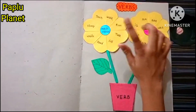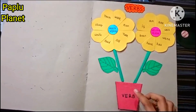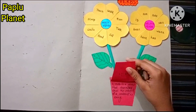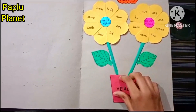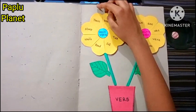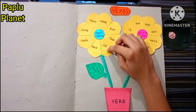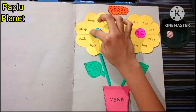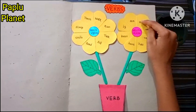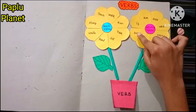Verbs: main verbs and helping verbs. A verb is a word that describes what the subject of a sentence is doing. Main verbs: teach, walk, run, talk, sit, read, write, sleep. Helping verbs: is, am, are, was, were, has, have, been.